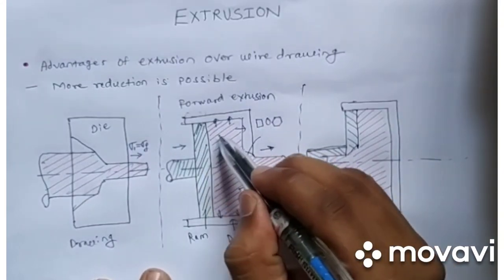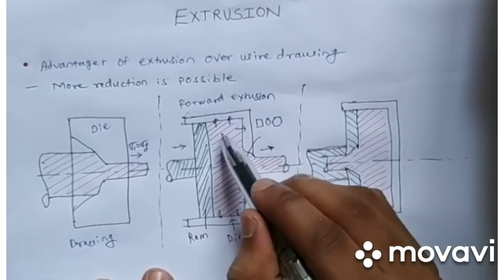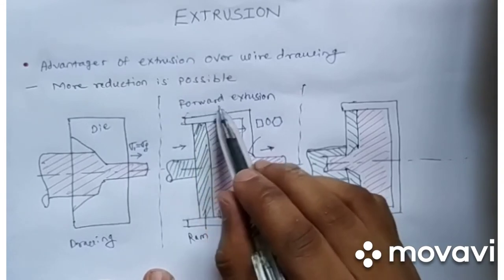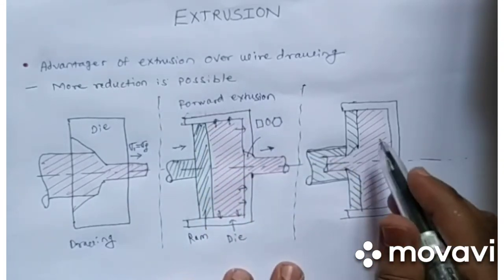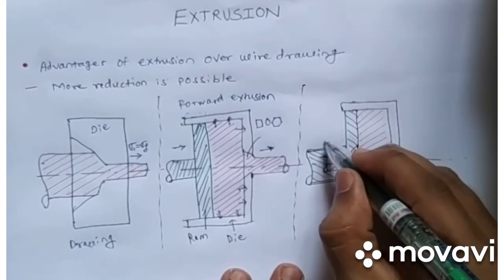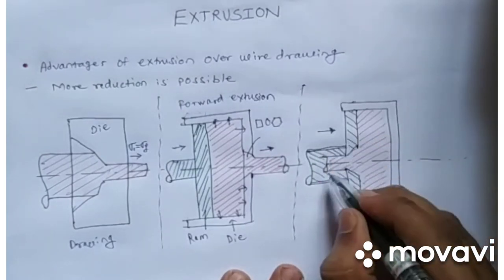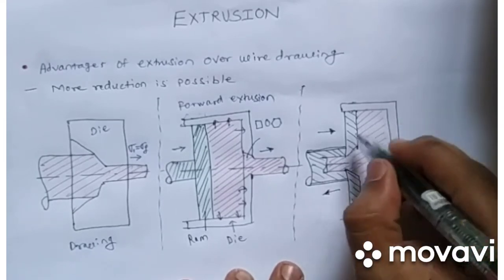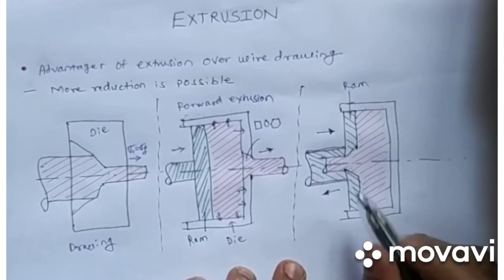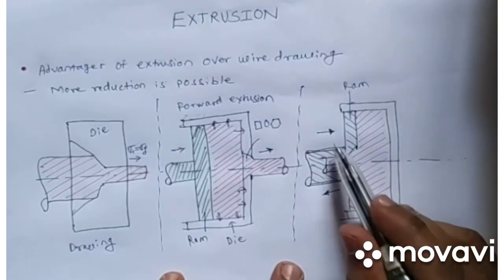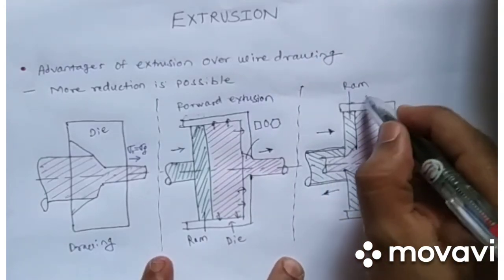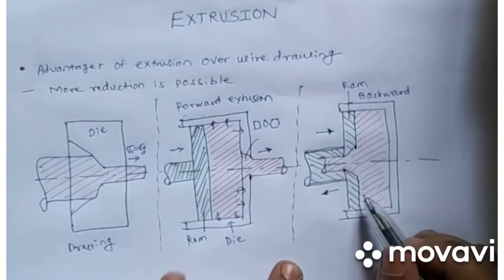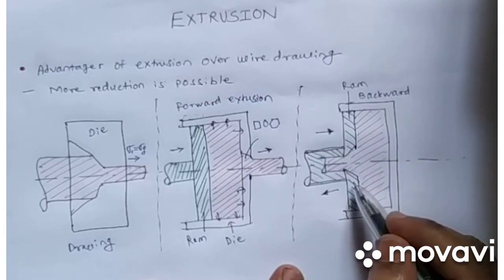In direct extrusion, the ram is in direct contact with the material and there is friction, with both moving in the forward direction. In backward or indirect extrusion, the die cavity is built into the ram. The ram presses in one direction but the material flows in the opposite direction through the ram's cavity. Since the material moves opposite to the ram, this is called backward or indirect extrusion.